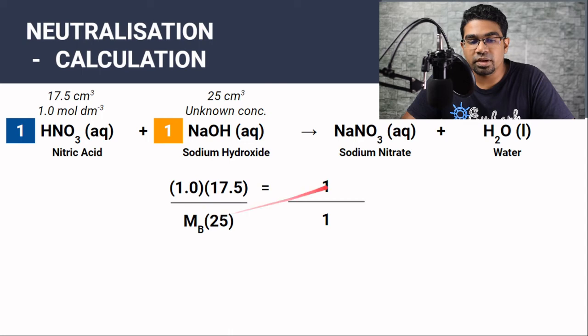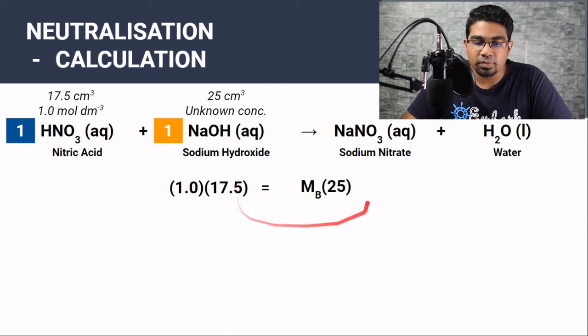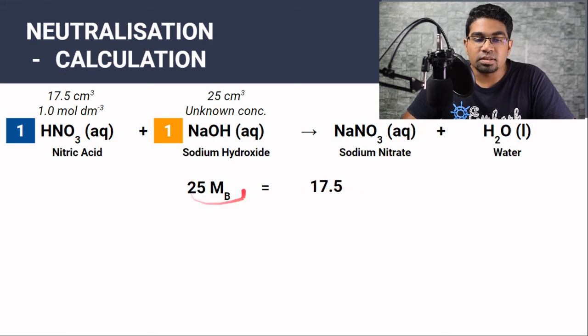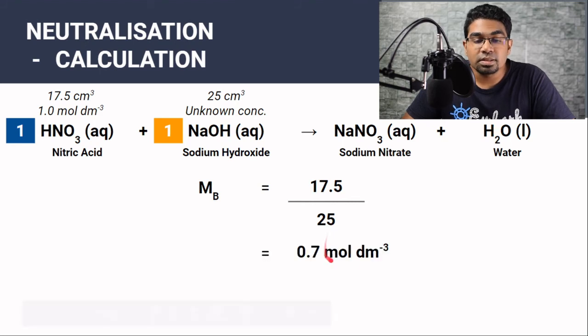Here we can do cross multiplication. So we cross multiply here. This is what we get. We make MB the subject of the equation. So it would be 17.5 divided by 25. And this answer is 0.7 moles per dm cube.